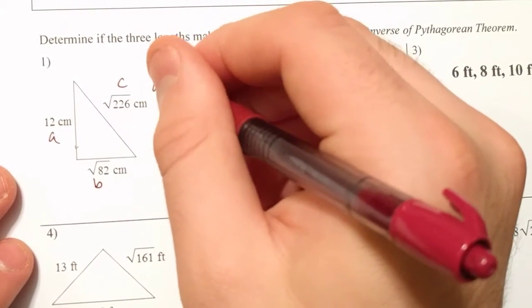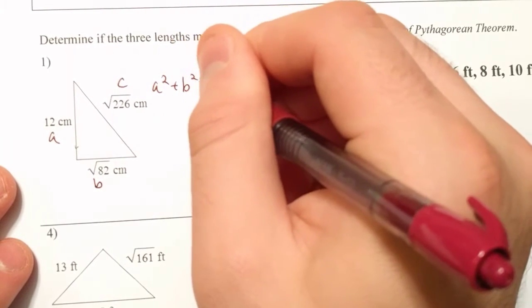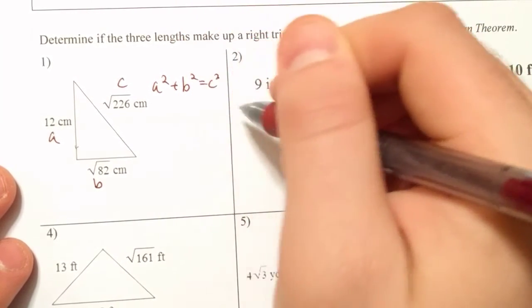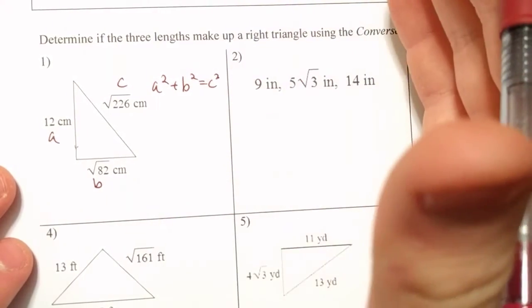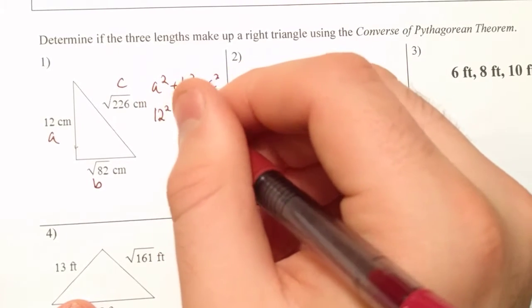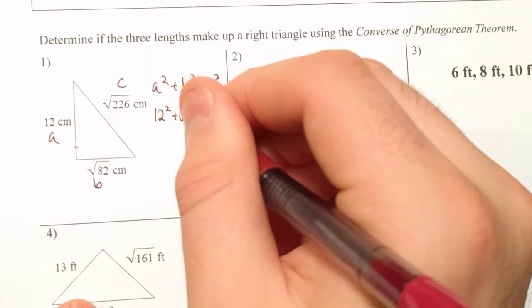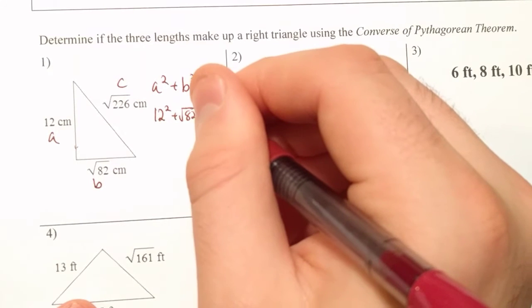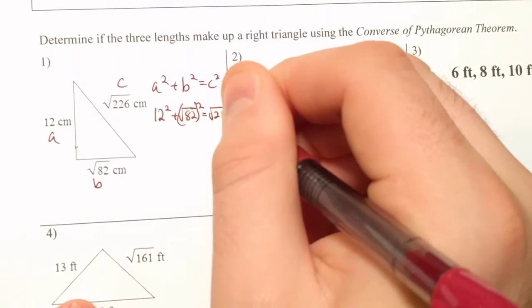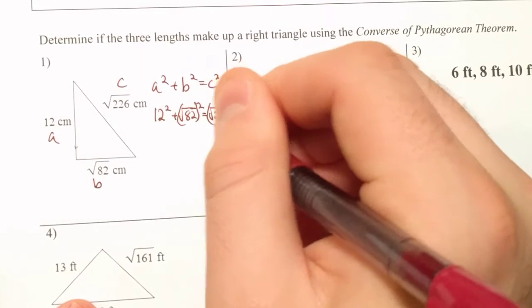So we're going to plug these numbers in, and if this side equals this side, we can check it off and say yes it is. If they're not equal, though, you're going to go ahead and say no. It's going to be 12 squared, plus the square root of 82 squared, equals the square root of 226 squared.